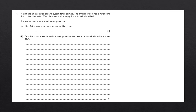Question 5. A farm has an automated drinking system for its animals. The water bowl is automatically refilled when empty using a sensor and a microprocessor. Question A asks to identify the most appropriate sensor. When given a system explanation, they lay out the condition — when the water bowl is empty — and the corresponding action — it is automatically refilled. To identify the sensor, we ask how it determines when the bowl is empty. We can use a level sensor, though a moisture sensor or pressure sensor would also be acceptable.